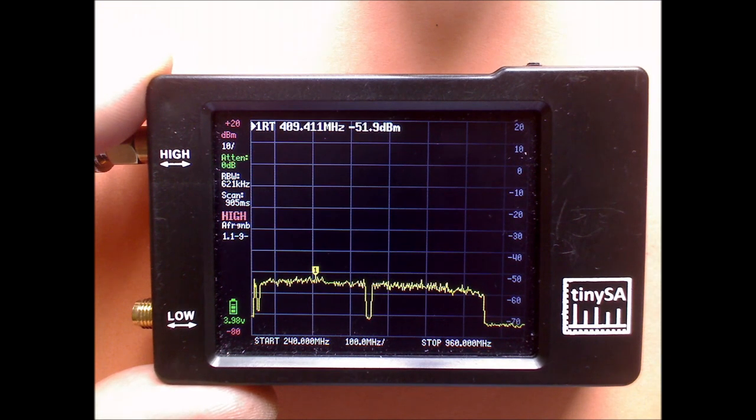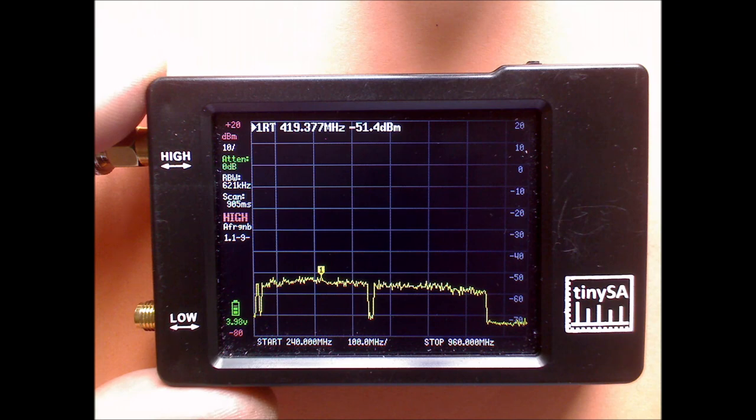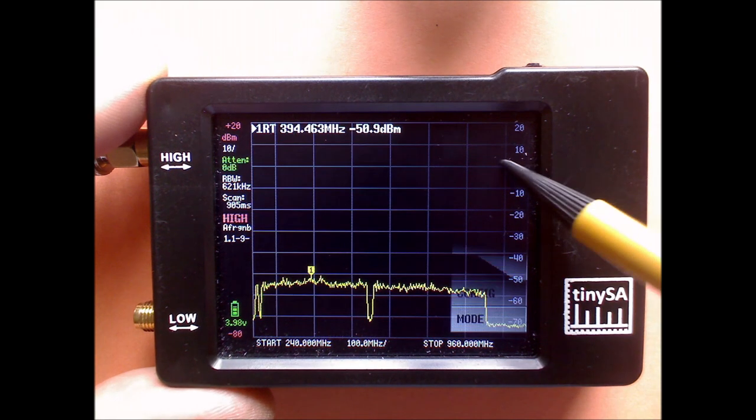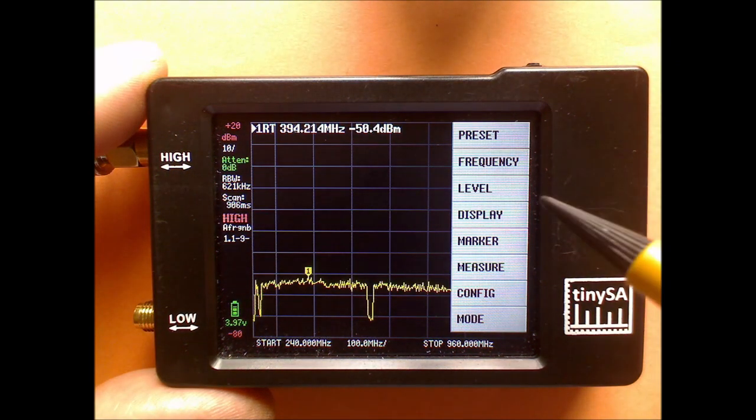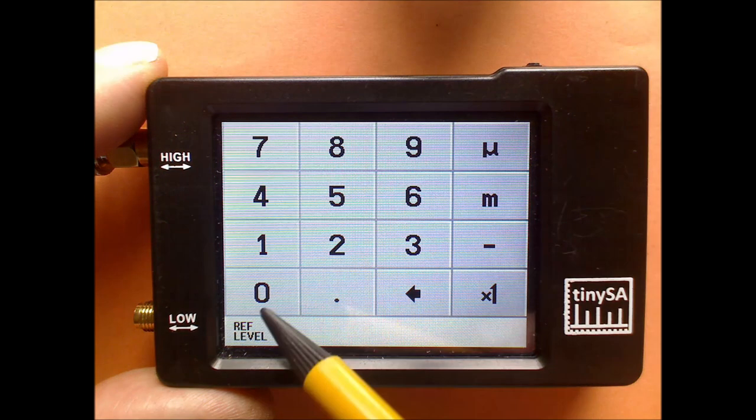As you can see, the cable is now connected to the high input. And it looks like the signals are much lower. But that's because the reference level is changed. So we're going to put the reference level more or less back at 0.